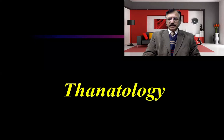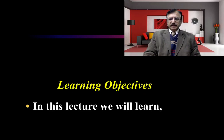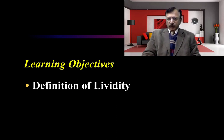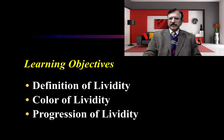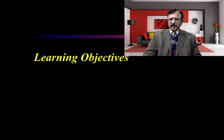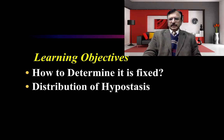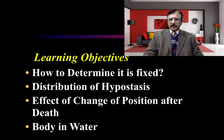As we are discussing Thanatology, this is the fifth lecture of the series. The learning objectives of today's lecture are: what is post-mortem lividity, what is the normal color of lividity, how it progresses, how we can determine that it is fixed, its distribution on the body, the effect of change of position after death, and what happens to post-mortem lividity if the body is in water.